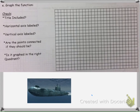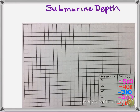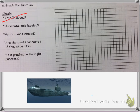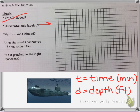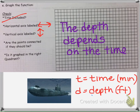Now we are going to graph the function. We need a title — I'll call it 'Submarine Depth.' We label the horizontal axis as T for time in minutes and the vertical axis as D for depth in feet. The independent variable, time, goes on the horizontal axis, and depth — the dependent variable — goes on the vertical axis.